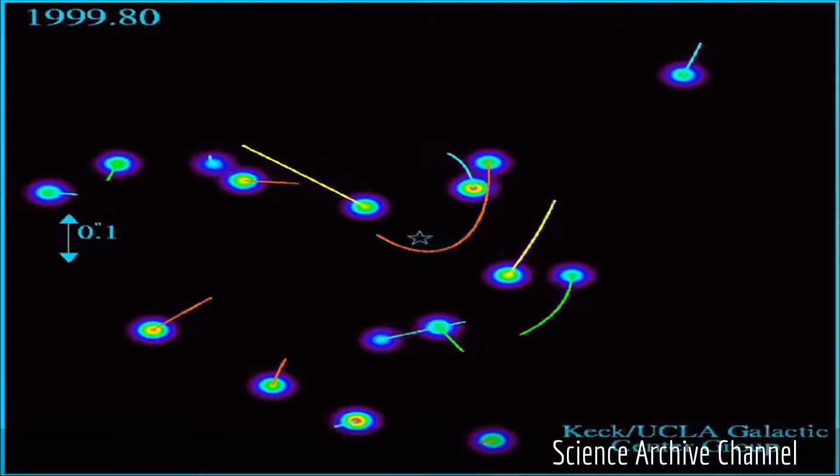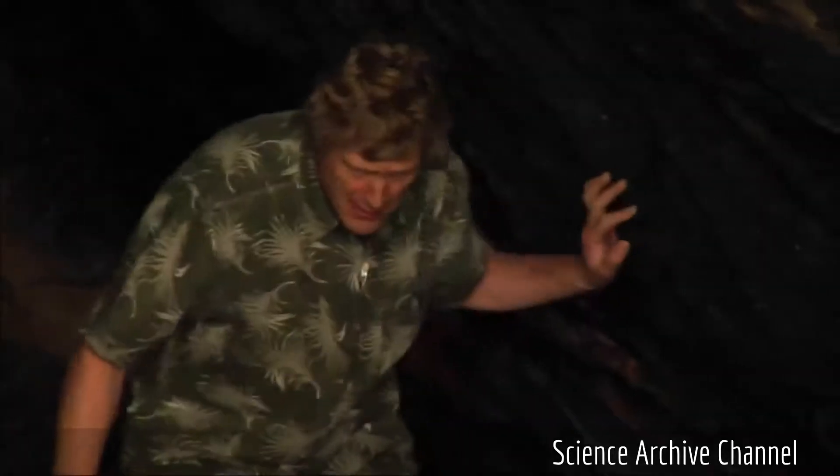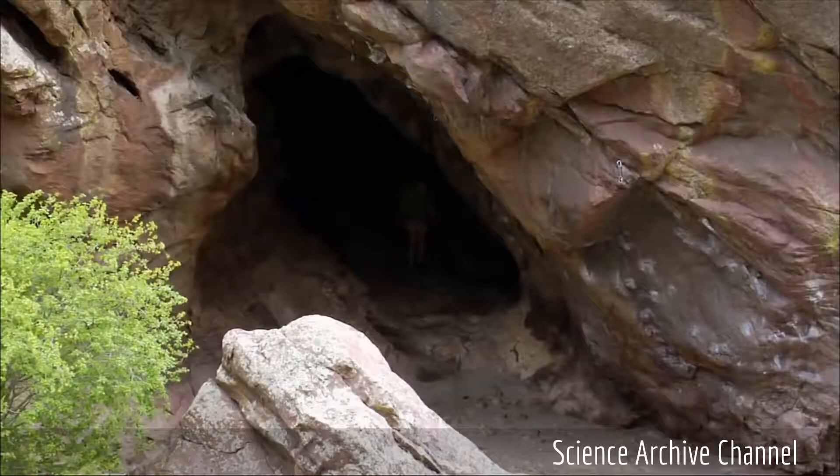So this is without adaptive optics. This is what you would see. In this big square there's nothing. We turn adaptive optics on and you see the stars. This region contains the stars that provide the keys to our experiment. So we want to watch how these stars move.